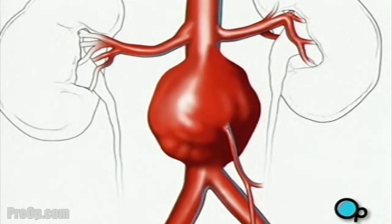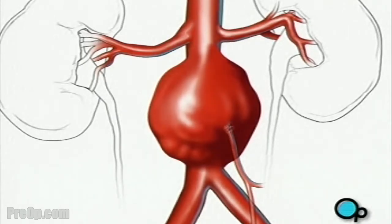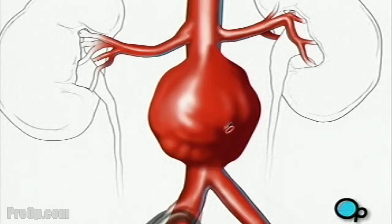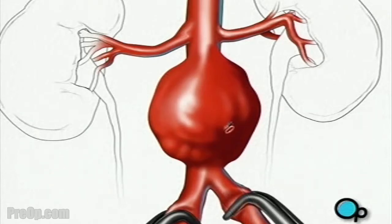Now your doctor can begin to remove the clot. First, he or she will apply clamps to each of the two arteries that branch away from the main artery, temporarily preventing blood from flowing to your legs.